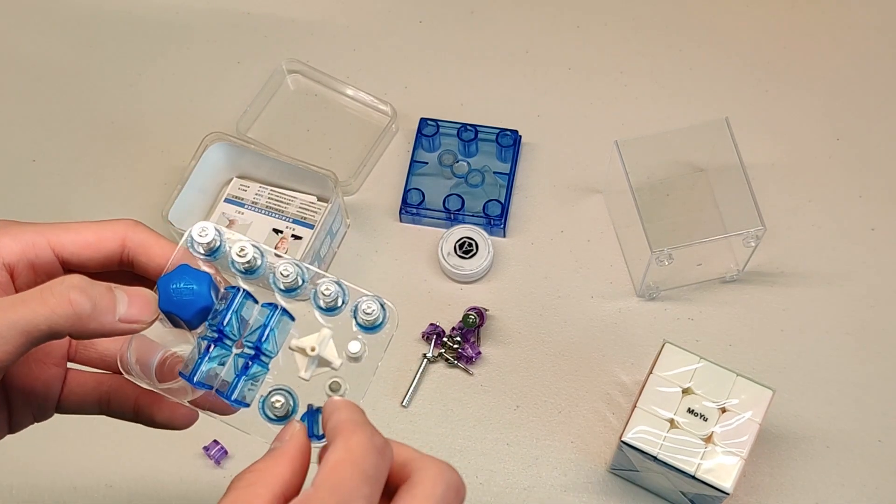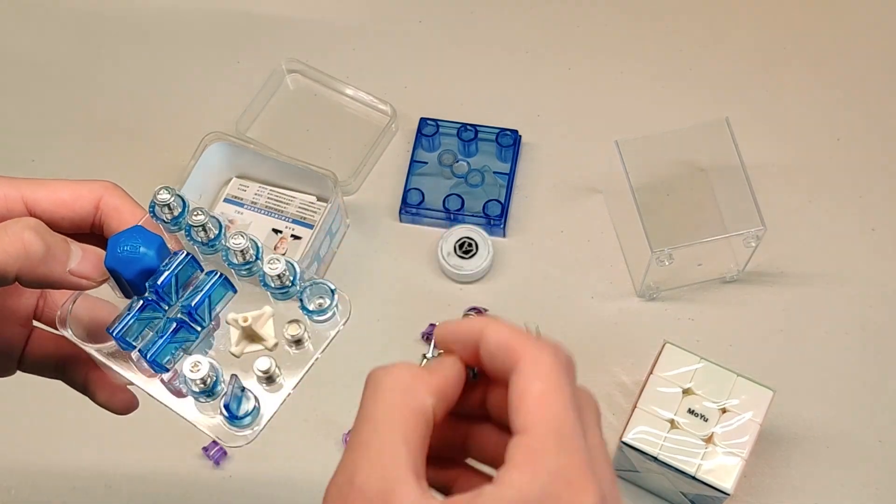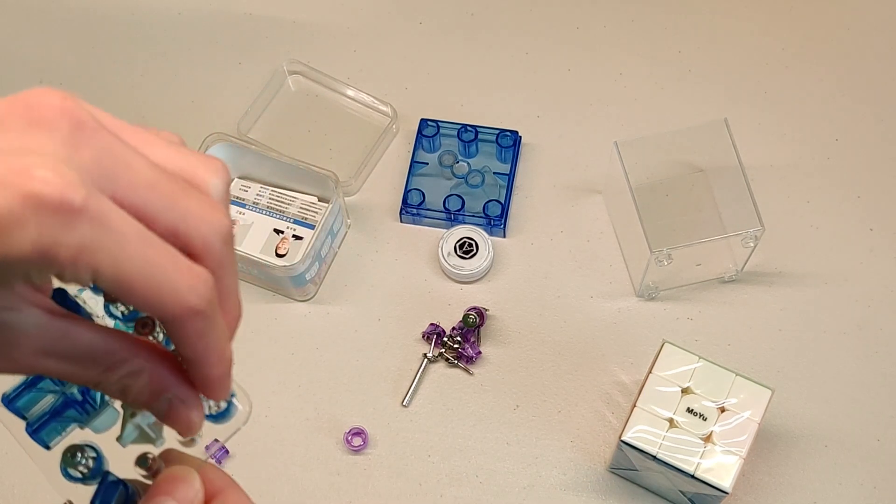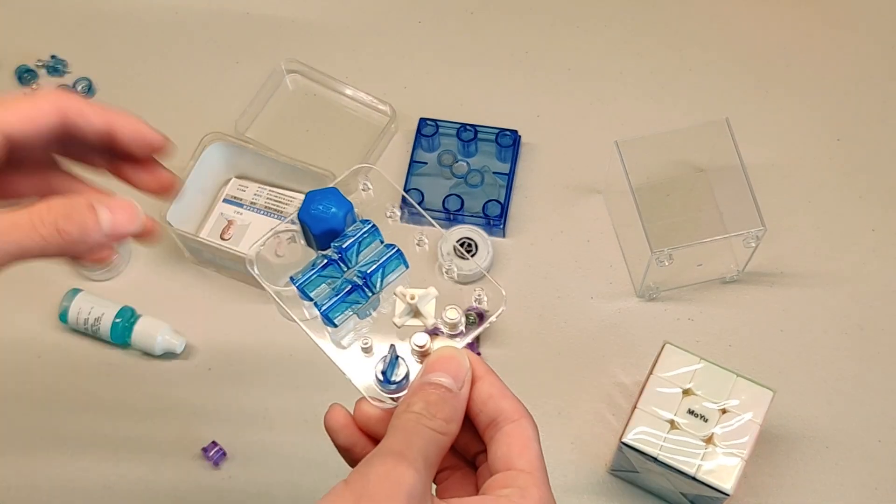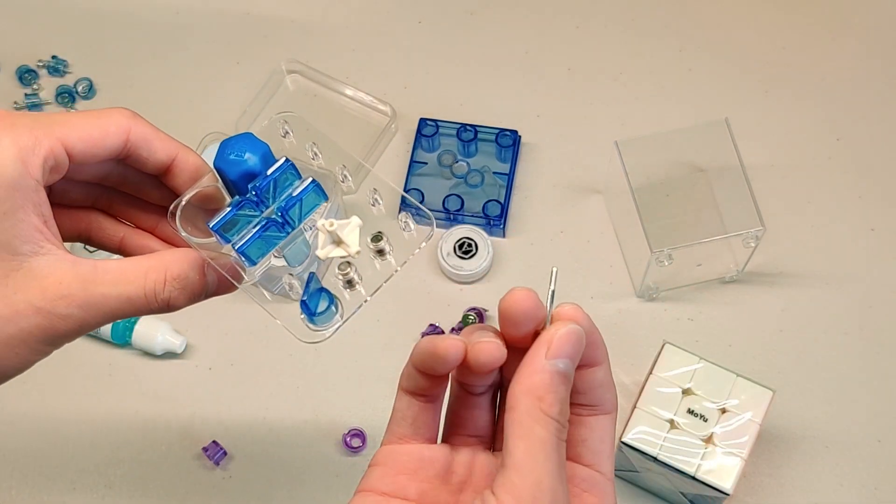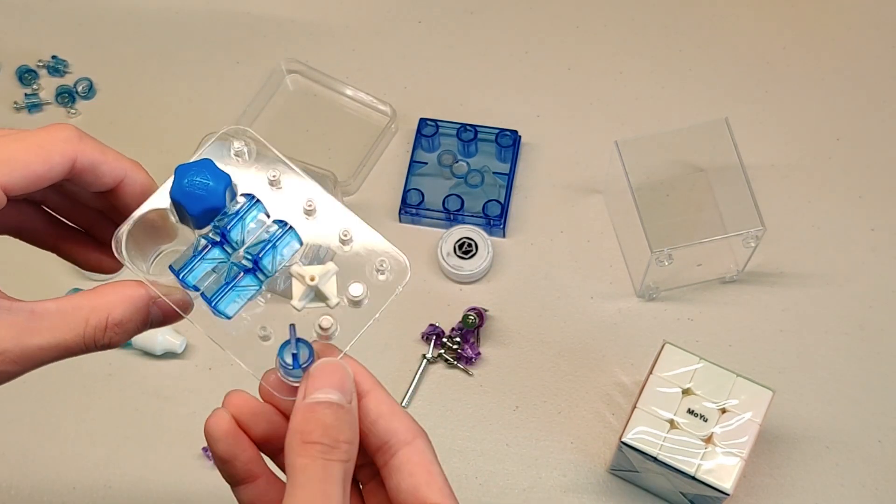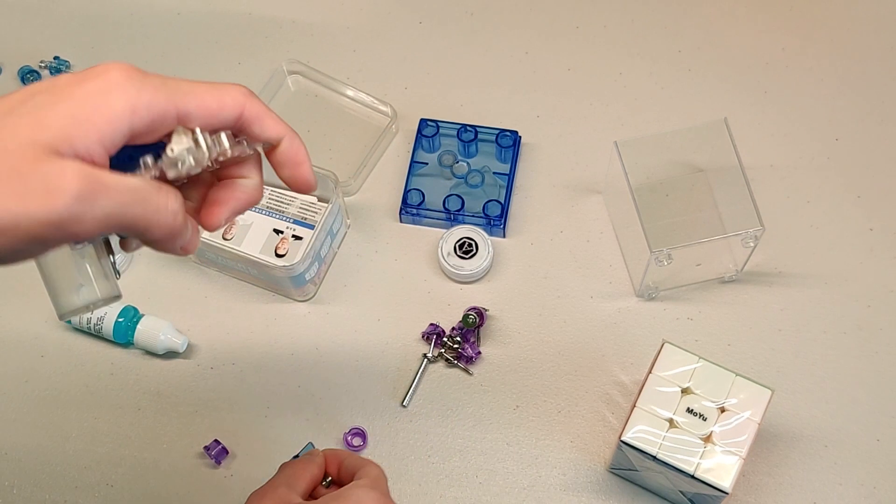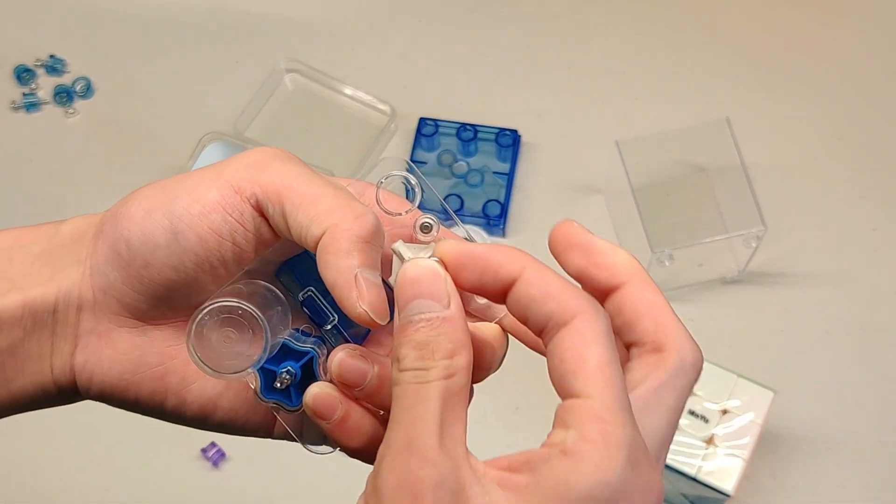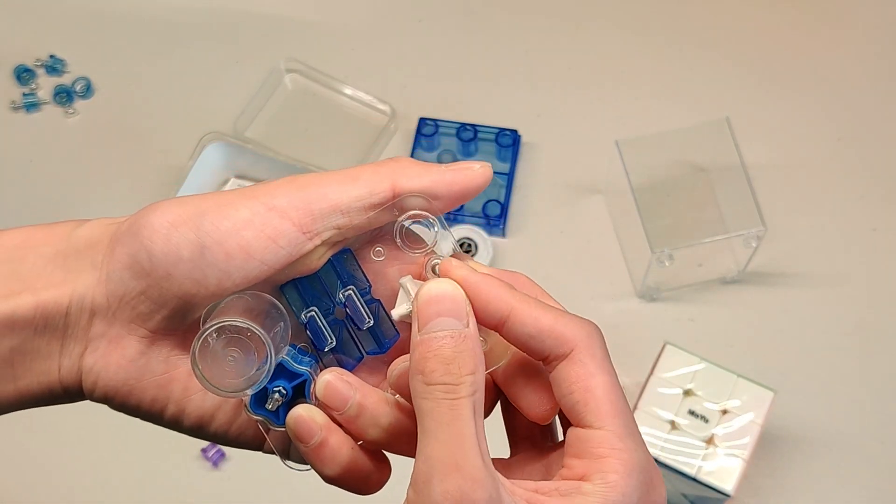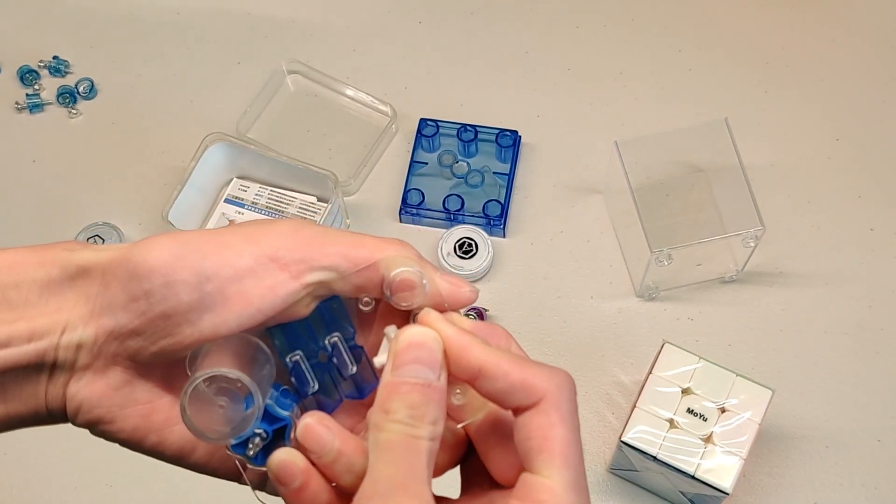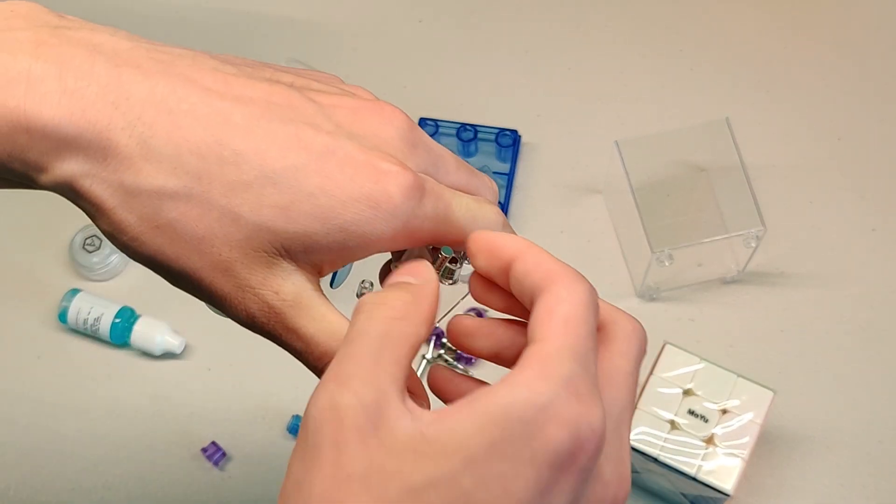The way that you take these magnets out is kind of annoying. You got to take one of these screws, and the magnets are in this capsule thing. They can't really come out, so you flip this thing over. There's a small little hole there, and you stick the screw in and push kind of really hard, and the magnets pop up.